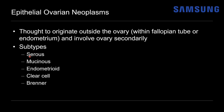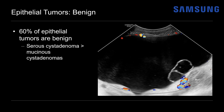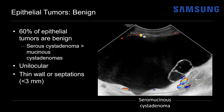Serous and mucinous tumors can be benign or malignant; endometrioid and clear cell are typically malignant; and Brenner tumors are benign. Most epithelial tumors — about 60% — will actually be benign, and those are usually serous cystadenomas with mucinous cystadenomas less common. Shown here is a combined seromucinous cystadenoma: a large tumor with low-level echoes corresponding to mucin content. Benign tumors tend to be unilocular; when septated, they have thin septations with a thin wall and no solid component.